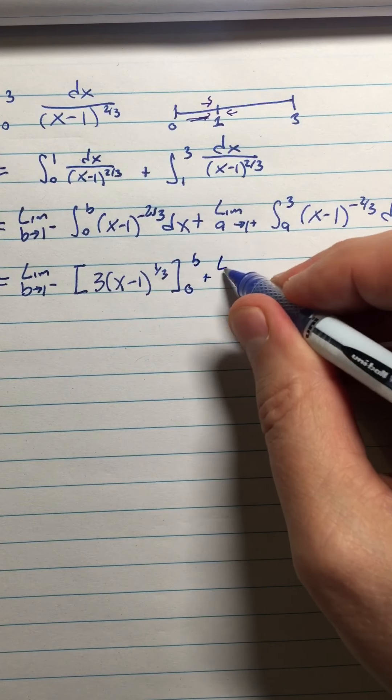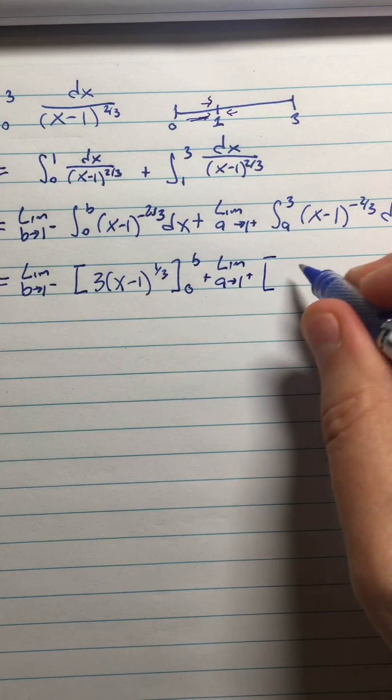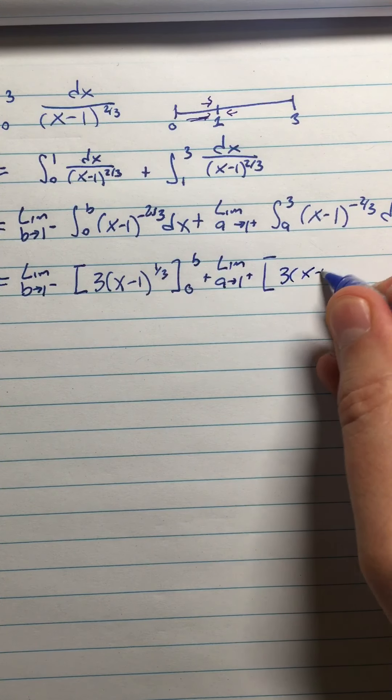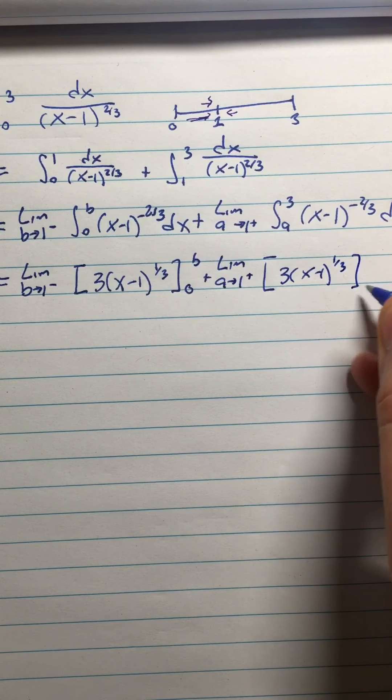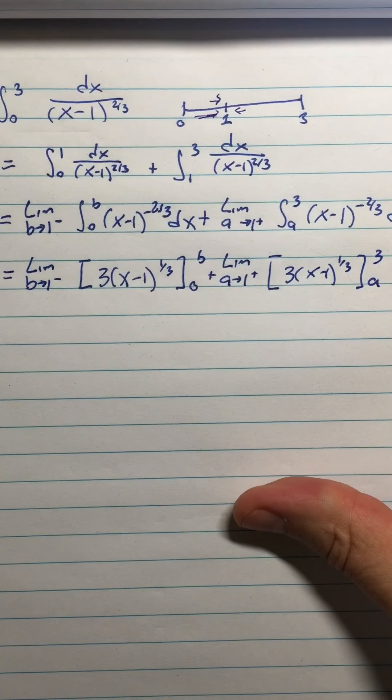And then I have plus limit as a approaches 1 from the right of the same anti-derivative, 3(x-1)^(1/3) from a to 3. And those are my two parts of the integral.